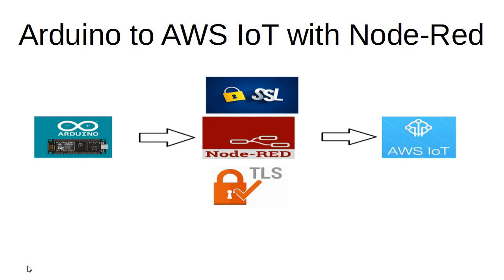Now there are two versions of Node-RED. There's a locally based Node-RED, which installs a local web server on your personal computer. We don't want to use that version because it has a dynamic IP. We want a static IP. We don't want to deal with port forwarding or VPCs. So by using Node-RED in the cloud, we have our own web address to forward our data to, certify it with SSL/TLS, and then forward that data onto AWS IoT.